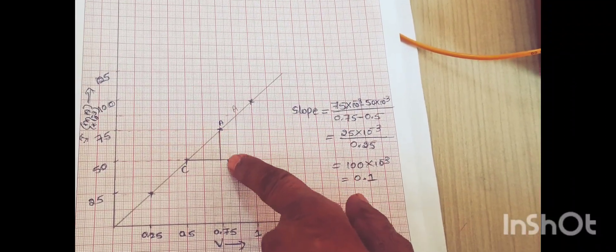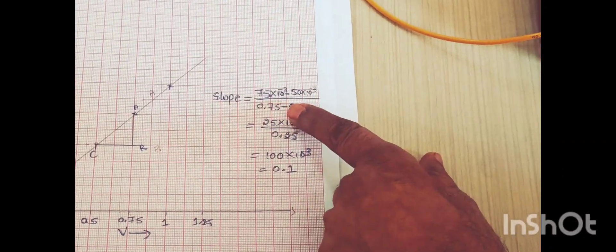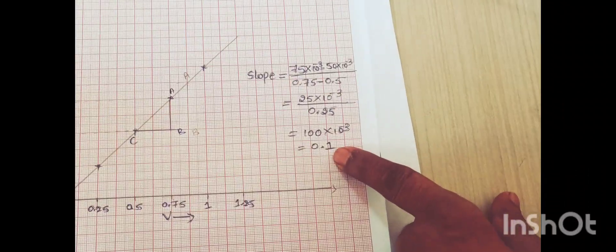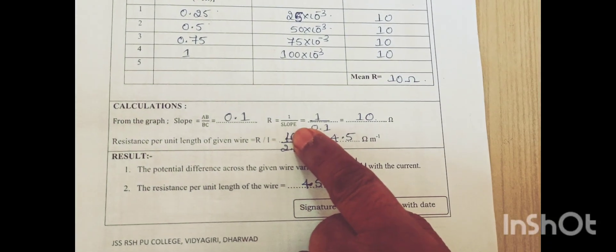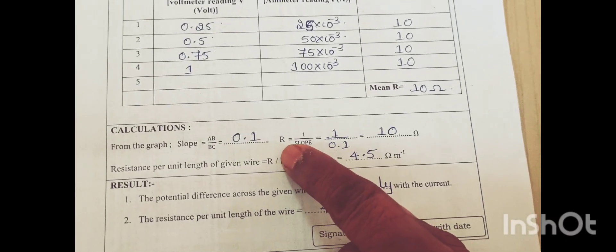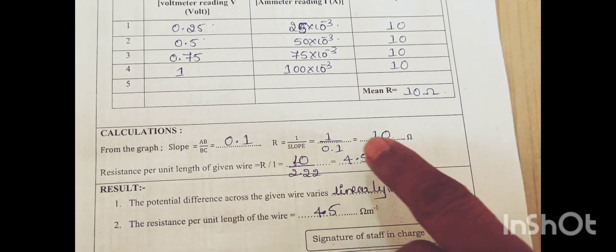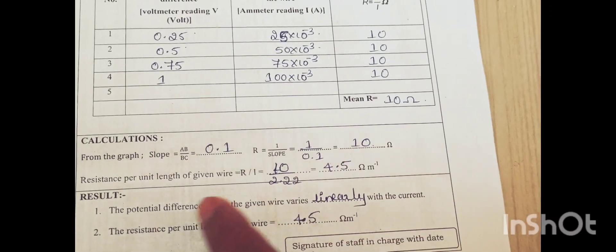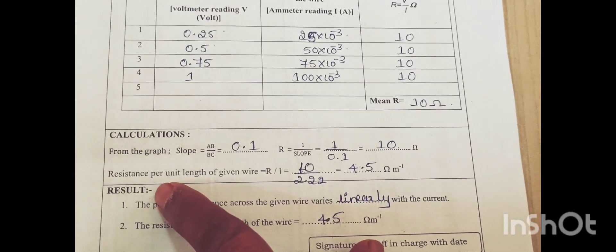We have to get the slope: AB upon BC. Here I have shown the value of slope which is 0.1. This slope value is taken in the calculation part, and if I take the reciprocal of the slope, it will give resistance: R equals 1 by slope, which is 10 ohm.